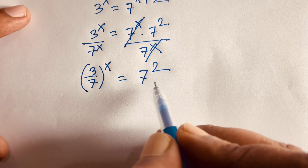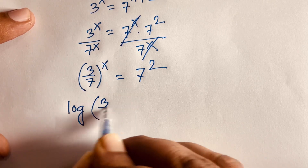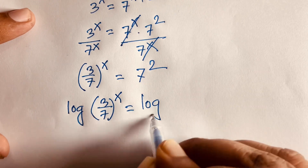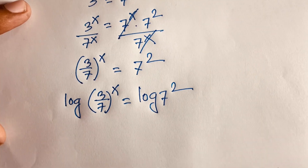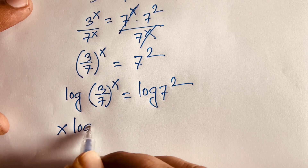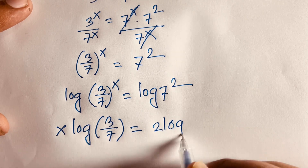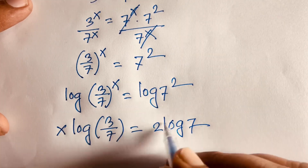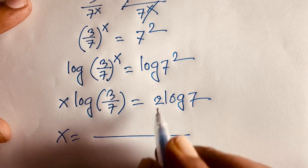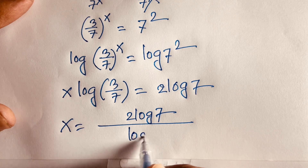At this moment I apply log to both sides, so log of 3 over 7 whole to the power x is equal to log of 7 power 2. Then x moves to the front, so x times log 3 over 7 is equal to 2 log 7. Therefore x is equal to 2 log 7 over log 3 over 7.